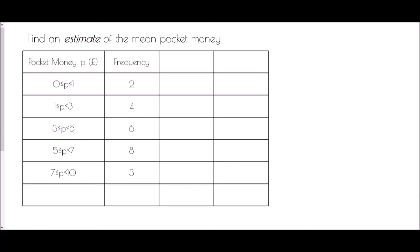For the same data, we're asked to find an estimate of the mean pocket money. The word estimate is very important — we are not going to be able to find the exact mean. Within every group, we don't know enough detail. In the first section, all we know is that two people received anywhere between zero and 99p — that could be two people who got nothing, or two people who got 90p each. That would change the mean completely. Because we don't know the exact values, we need to come up with a method to estimate.